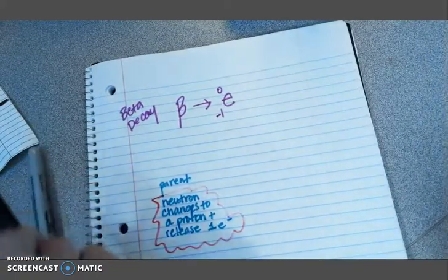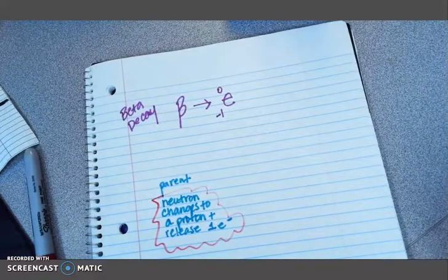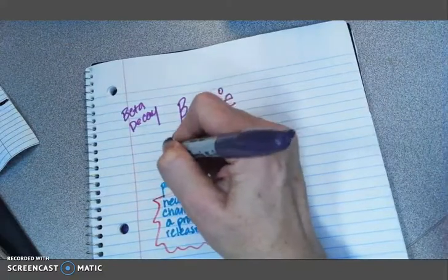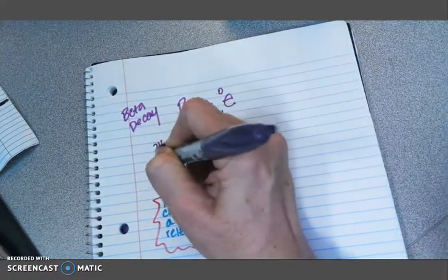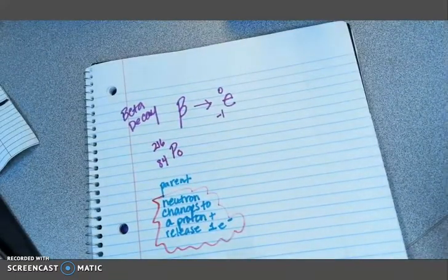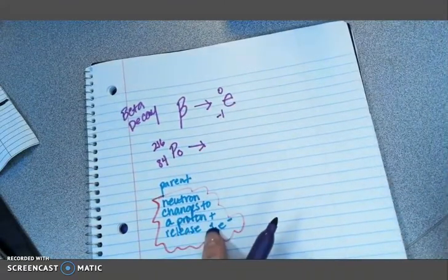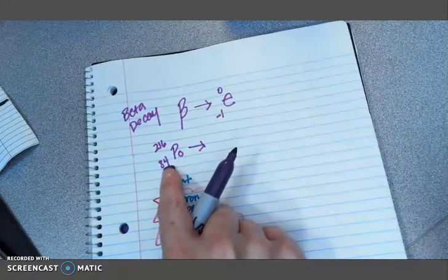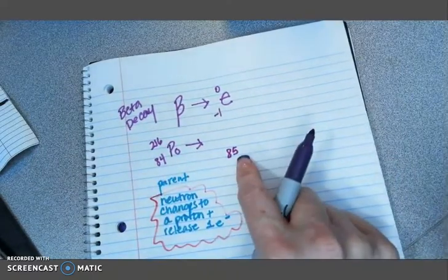So what's happening here, if I come up with an example of beta decay, say we start with what we had before, we start with polonium 216. Polonium 216 will undergo beta decay. So we have a neutron that changes to a proton. So our protons at the bottom, that's the number 84, is going to go up by one, because a neutron is changing to a proton.